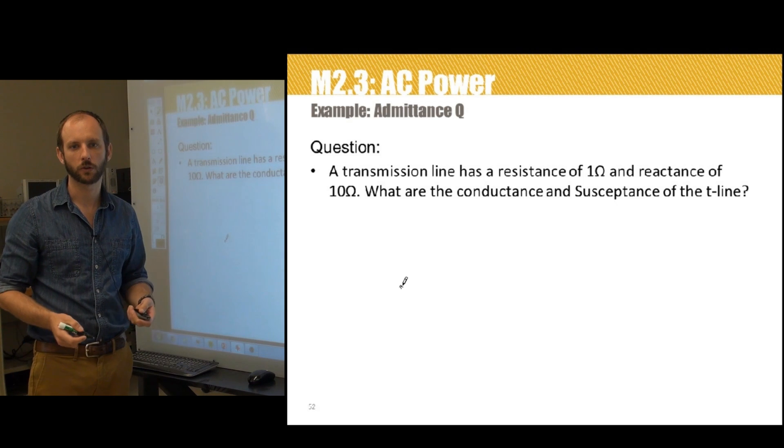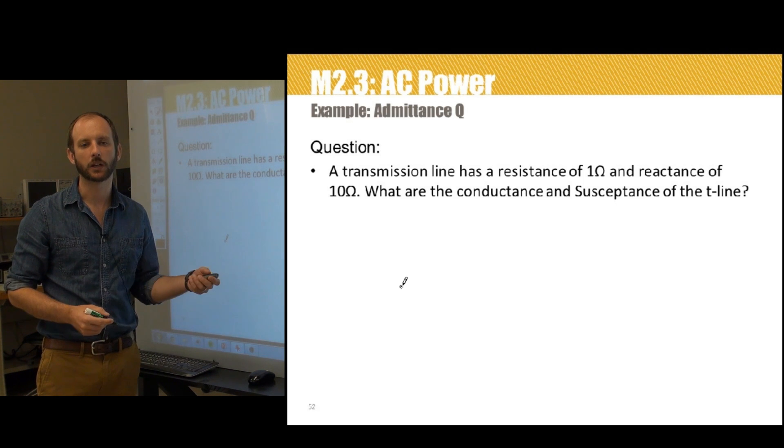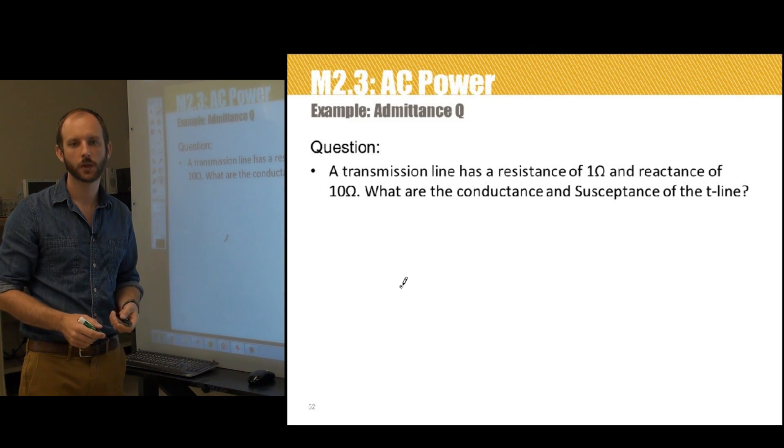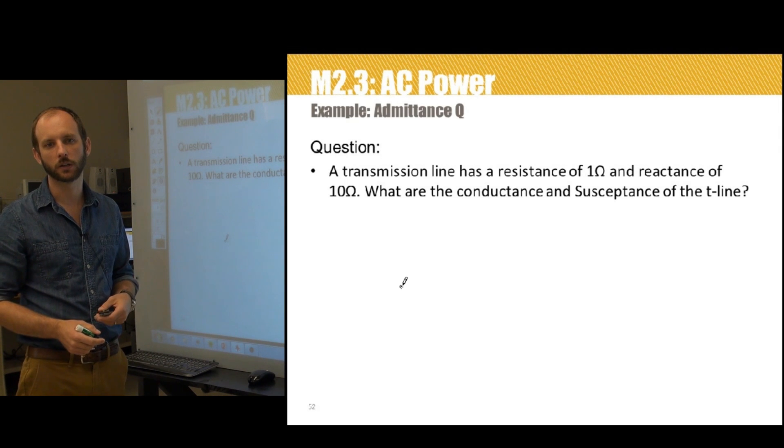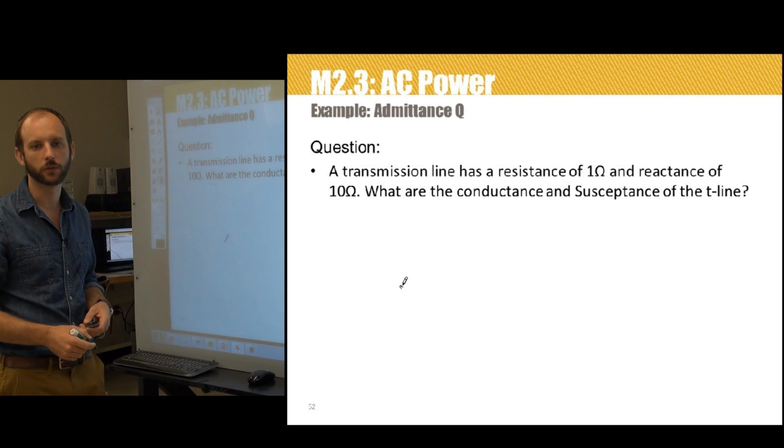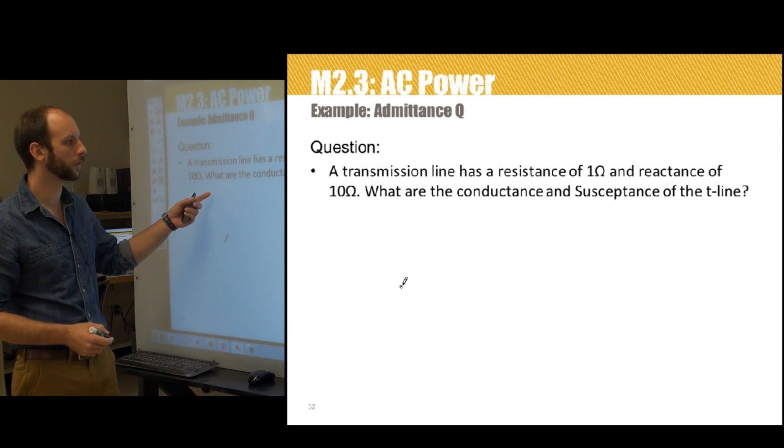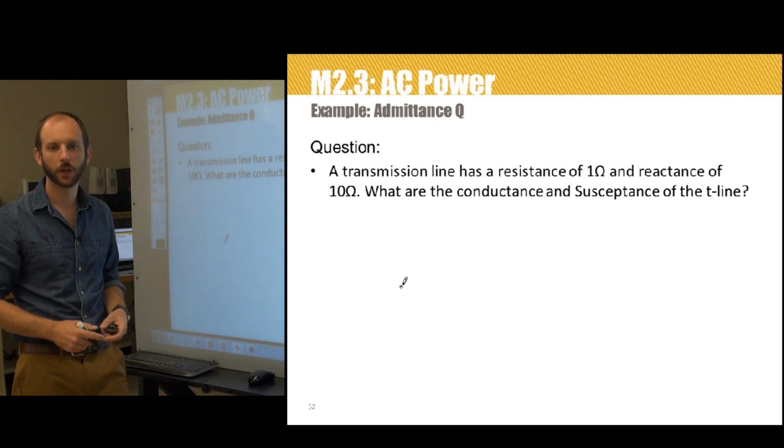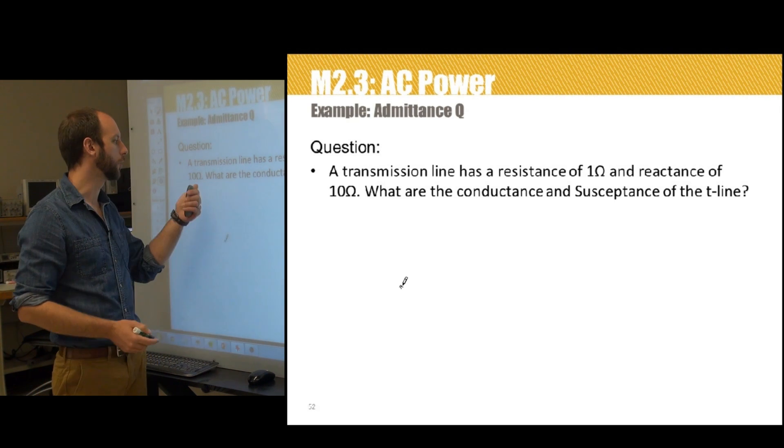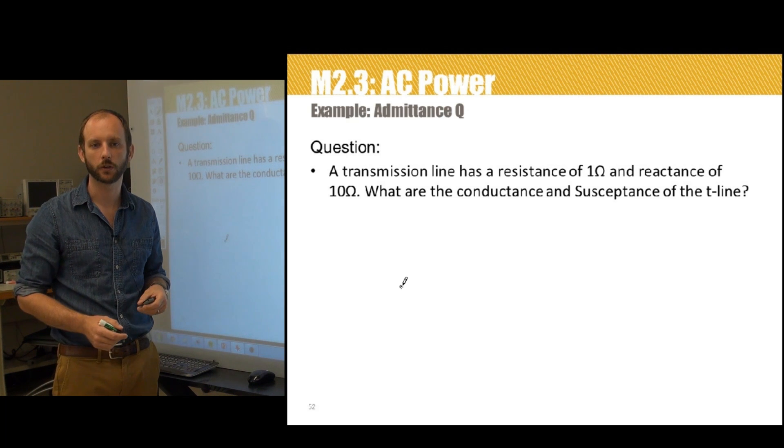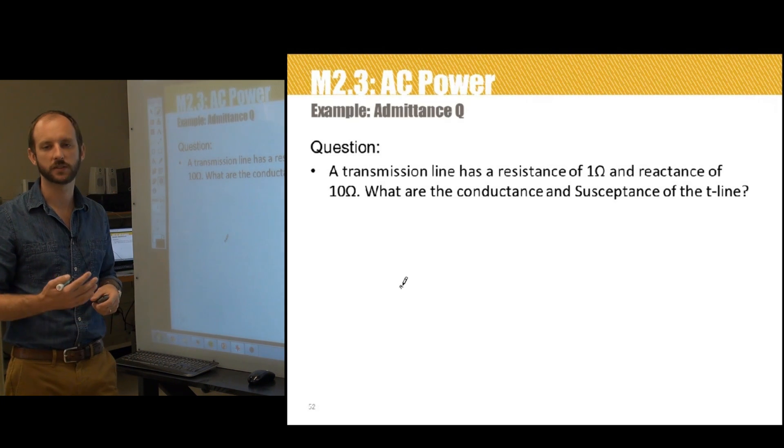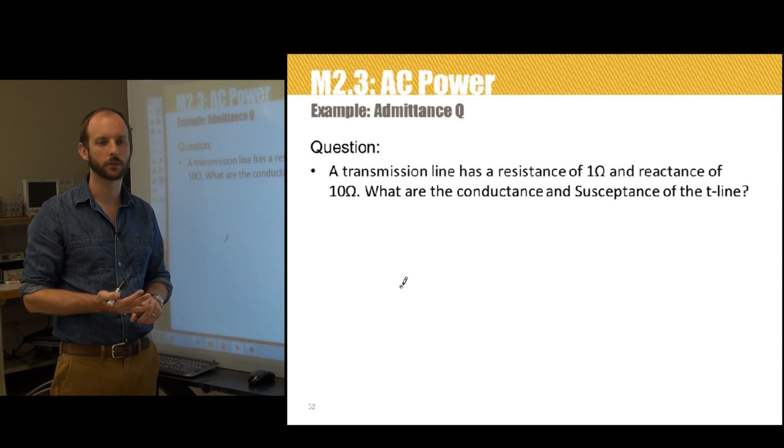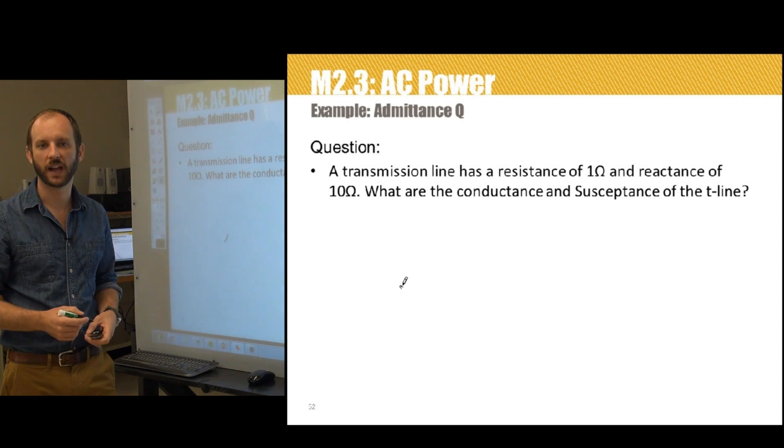We have a transmission line with a resistance of 1 ohm and a total reactance of 10 ohms. What are the conductance and susceptance of the transmission line? You'll notice that reactance was specified in this case as 10 ohms. That's really common in the power system. System frequency is 60 hertz, so instead of devices being specified in terms of inductance and capacitance, they just tell you how much reactance they have.